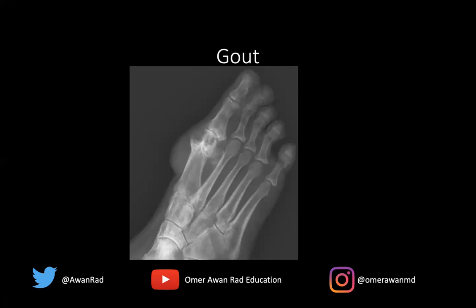Radiographically, although it can involve any joint, typically the first MTP joint is characteristically involved, and what you get are these really punched-out, well-defined erosions with sclerotic margins and overhanging edges. The erosions in gout are very well-defined, and what we mean by juxta-articular is they're right outside of the joint.